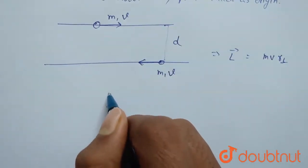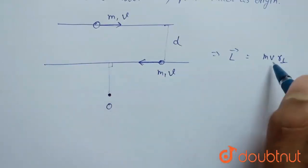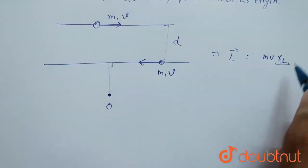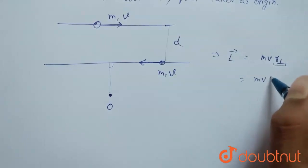Perpendicular distance from this O point to this line will be written here. So, mv into r perpendicular.